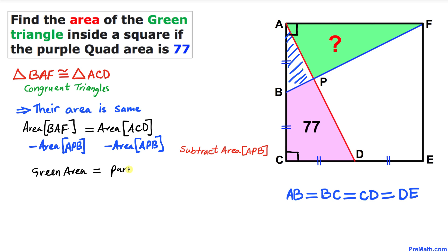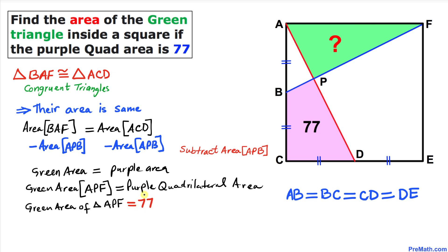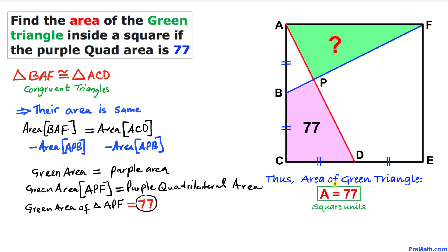Therefore, the green area of triangle APF equals the purple quadrilateral area on the right-hand side. The purple quadrilateral area is given to us as 77, so the area of this green triangle is 77 square units as well. Thanks for watching and please don't forget to subscribe to my channel for more exciting videos.